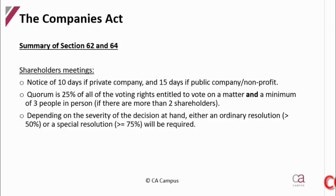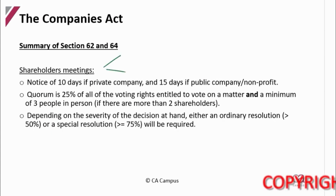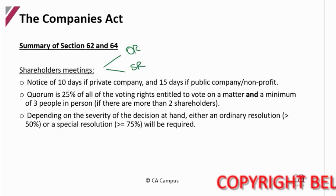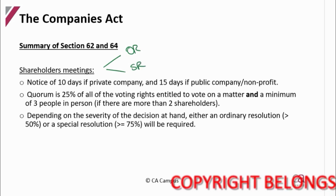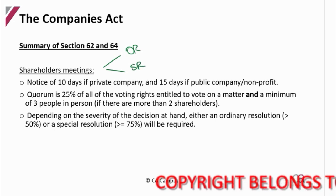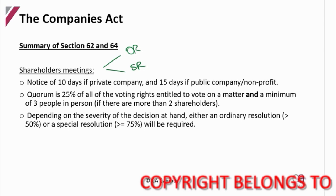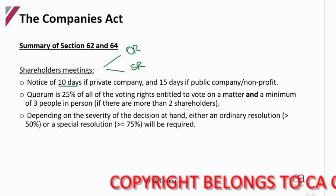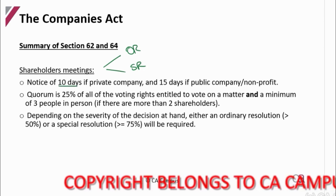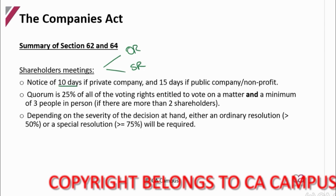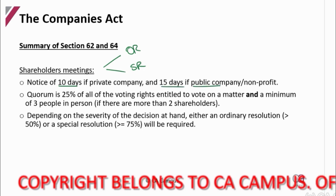Sections 62 and 64 cover shareholders meetings. At shareholders meetings, they are going to be passing either ordinary resolutions or special resolutions — only those two. Before a meeting, if it's a private company they have to give 10 days notice to all shareholders. If it's a public company or nonprofit, they have to give 15 days notice.